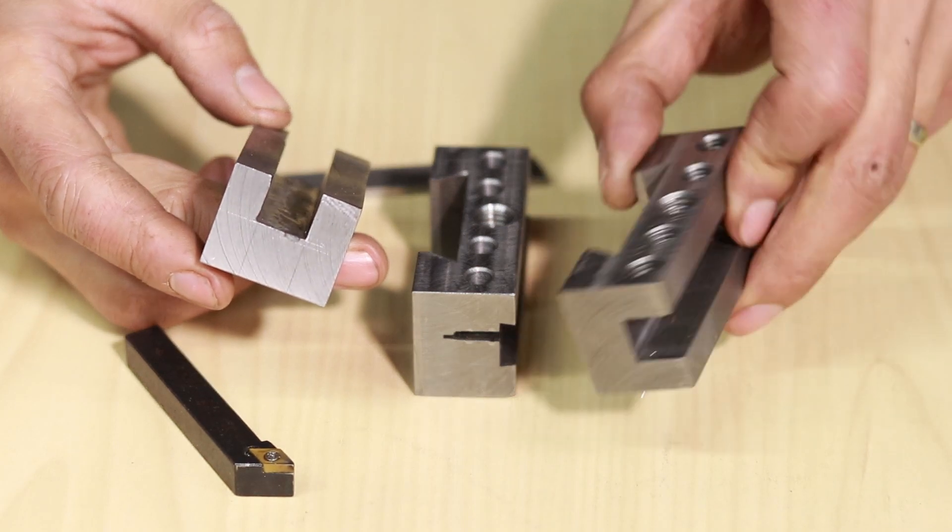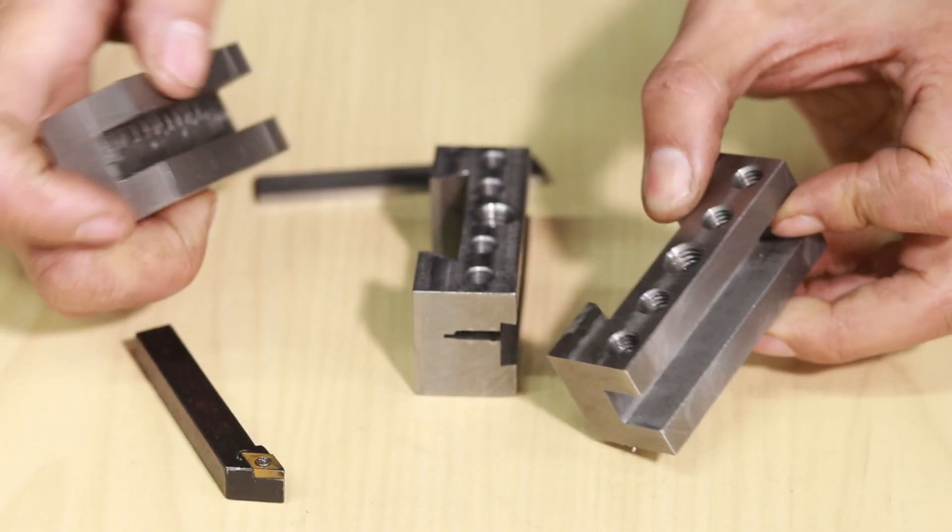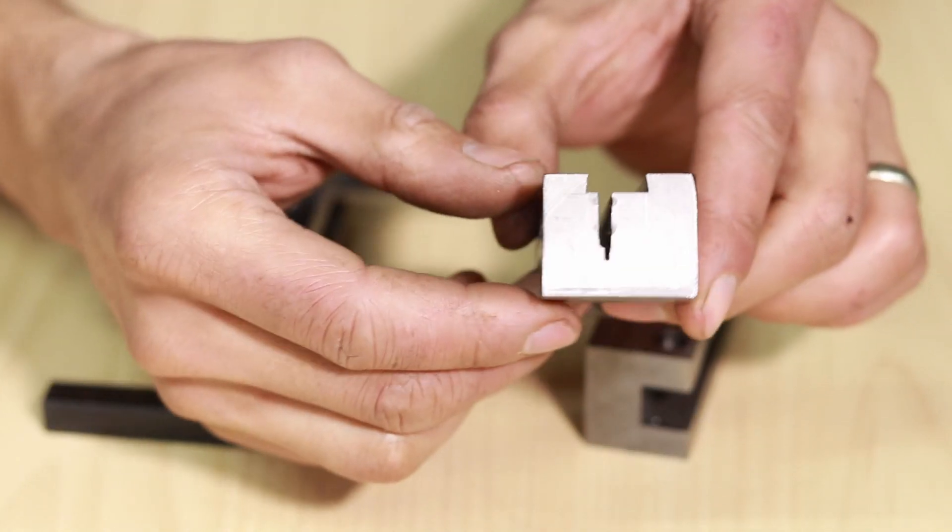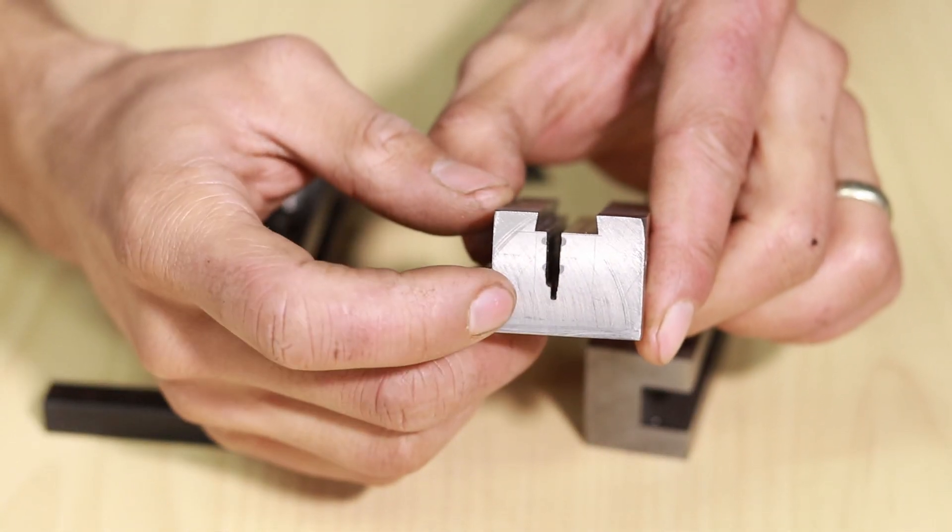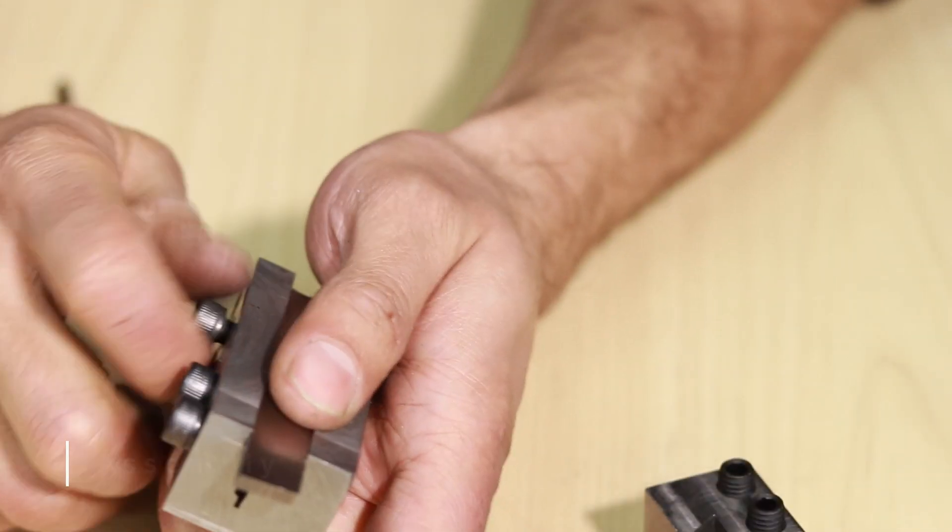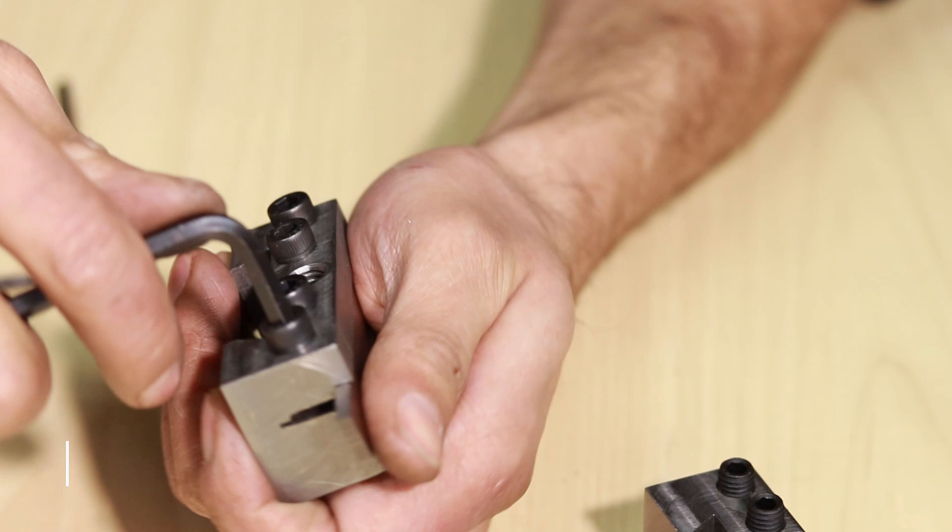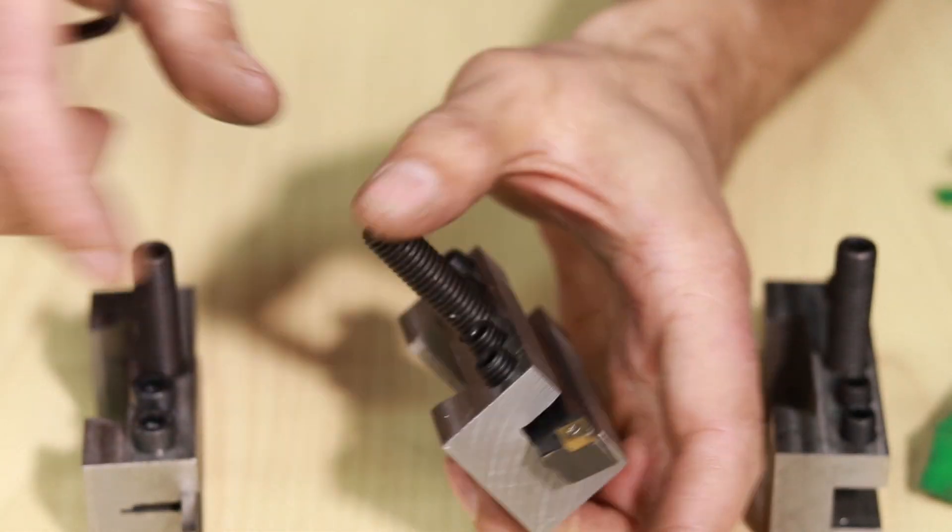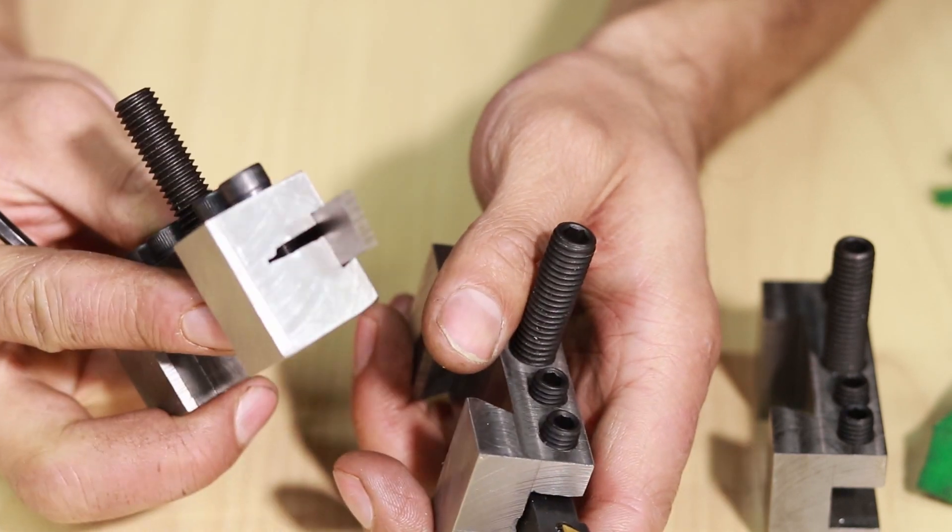These two are pretty straightforward. Just standard slots and some grub screws to hold the tool in. This one though I am pretty excited about. This is a parting blade holder with a bit of a dovetail and a bit of a kerf cut just to give me some more springiness. There we go. I'm going to be keen to try this out, see if it works.